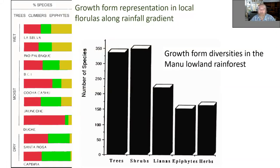Growth forms: tropical forests are dominated by woody plants. We have trees and shrubs — this is in Peruvian Amazon, in Manu lowland forest — trees and shrubs followed by lianas, and then epiphytes and herbs. Herbaceous plants are a distinct minority. The climbers and epiphytes also respond to the rainfall gradient; epiphytes are especially common in humid forests and diminish towards dry forest.